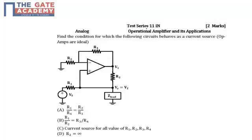Hello friends, this question is from test series number 11 from the subject of analog, and the topic name is operational amplifier and its application. It's a 2 marks problem. In the problem we have an op-amp circuit and the question says find the condition for which the following circuit behaves as a current source.